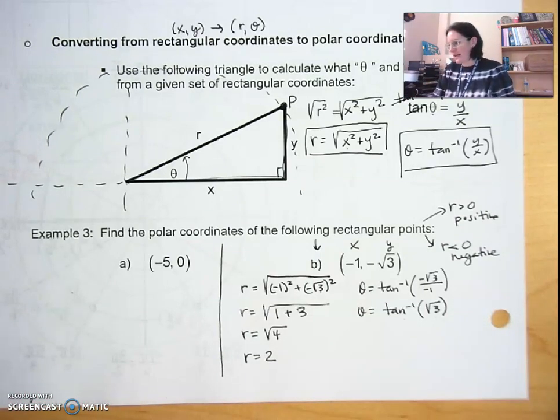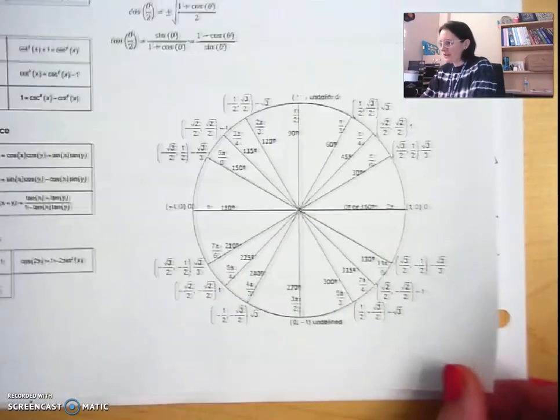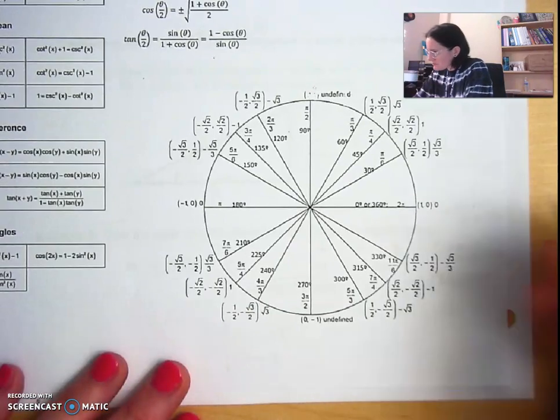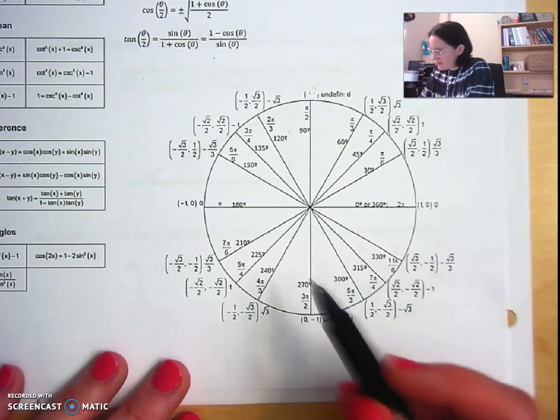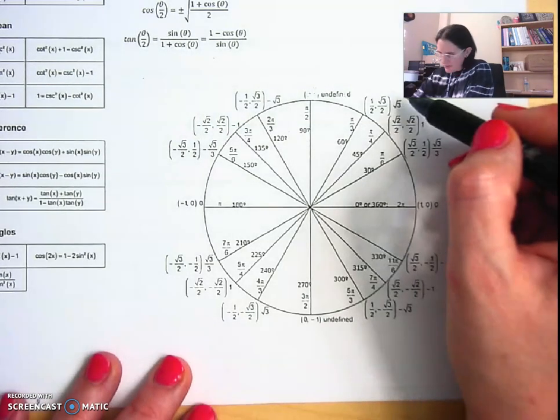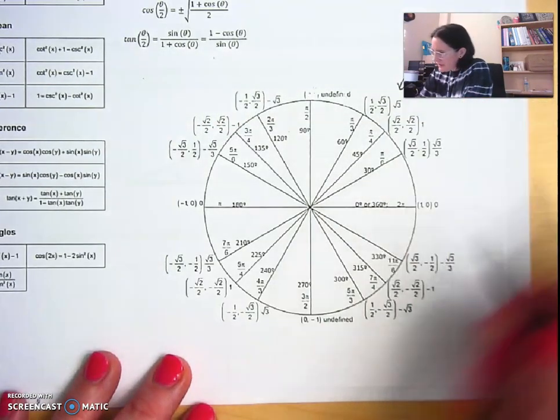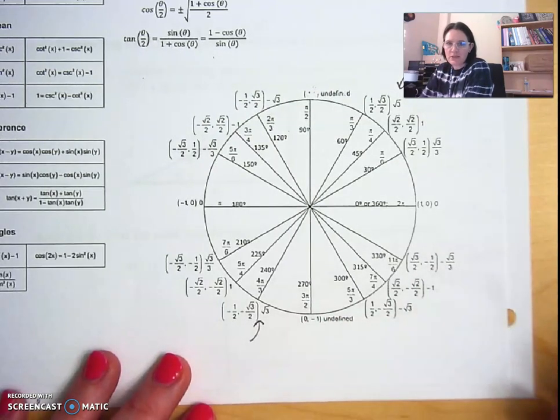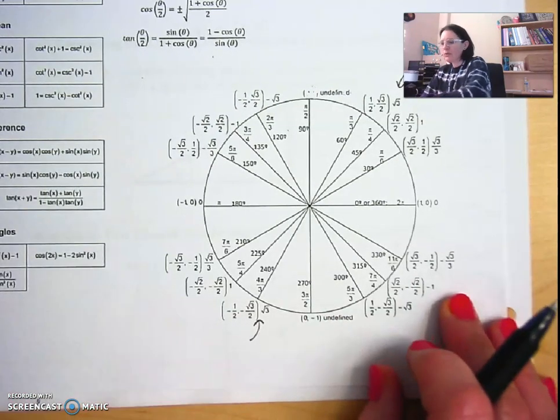So what you're going to do is figure out which theta has a tangent of radical three. What you might remember about your unit circle is that there will be two angles that have a tangent value of positive radical three. There's one right here at pi over three and one here at four pi over three.